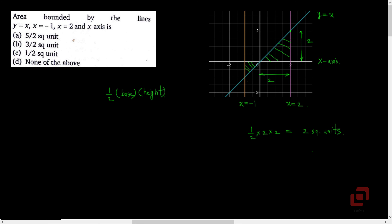So area of the larger right-angled triangle will be 1/2 into 2 into 2, which is 2 square units. The point in the third quadrant has coordinates (minus 1, minus 1), as it is the point of intersection of x equal to minus 1 and y equal to x. So the base of the smaller right-angled triangle is 1 and the height is also 1. Therefore area of the smaller right-angled triangle will be 1/2 into 1 into 1, which is 1/2 square units.